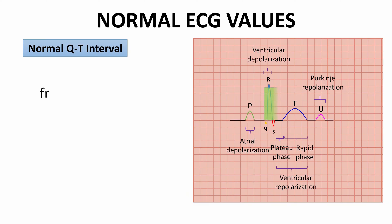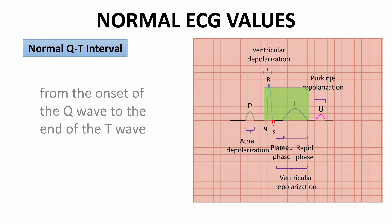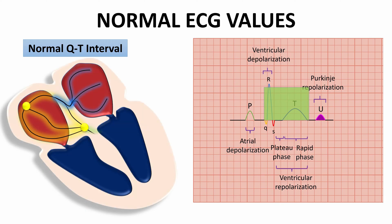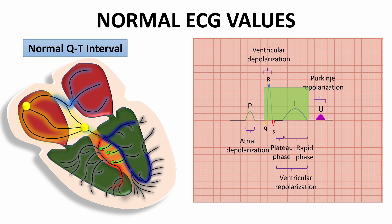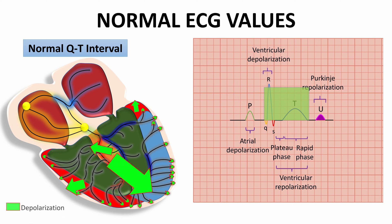The QT interval is measured on the horizontal axis from the onset of the Q wave to the end of the T wave. Since the QRS complex represents ventricular depolarization and the T wave represents ventricular repolarization, the QT interval denotes the total duration of ventricular systole. The QT interval includes the duration of the QRS complex, the length of the ST segment, and the width of the T wave.